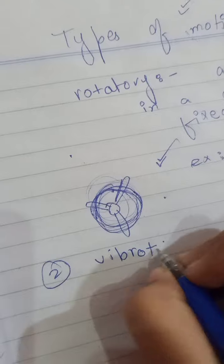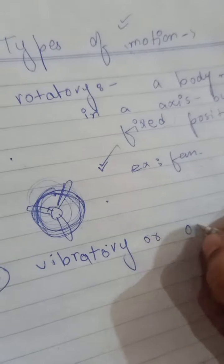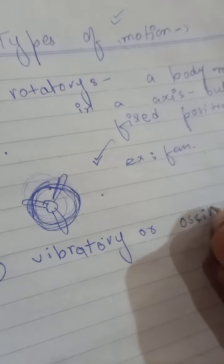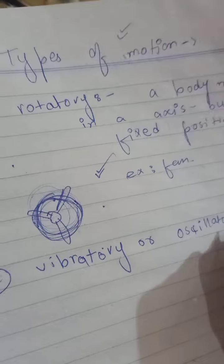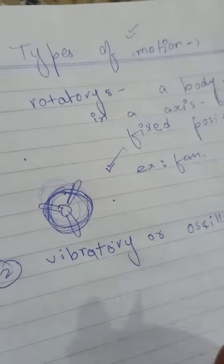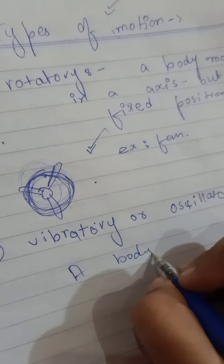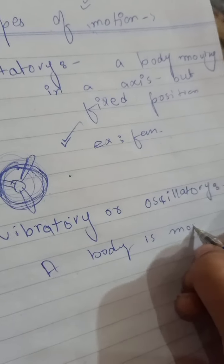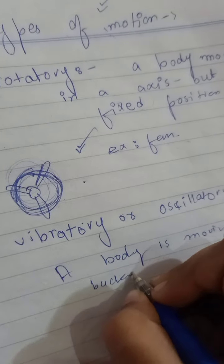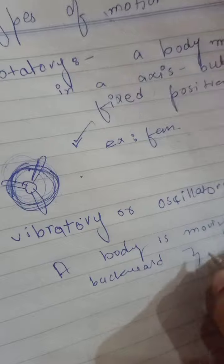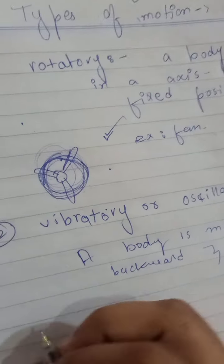The next type is vibratory motion, also called oscillatory motion. Oscillatory means that a body is moving backward and forward in a constant position.